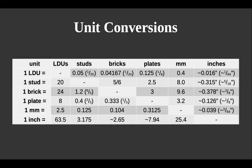One LDU is 1/20th of a stud. It's 1/24th of the width of a 1×1 brick, and it is 0.4 millimeters — because it's a 20th of the 8mm stud. So 8 millimeters is the width of a 1×1 brick, and the height is 9.6 millimeters. But if you use 20 and 24 LDU, everything is an integer. That's the point.